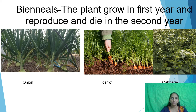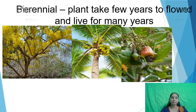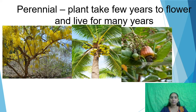If a plant grows in the first year and reproduces and dies in the second year, that is a biennial. Plants that take a few years to flower and then flower every year after that are called perennials. Perennials take a few years to flower, and after that, every year they have flowers.